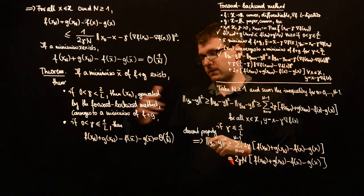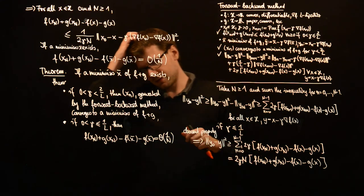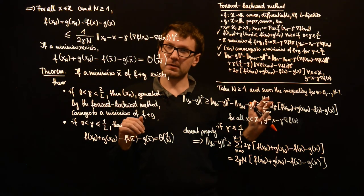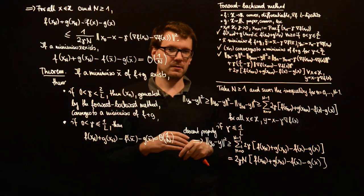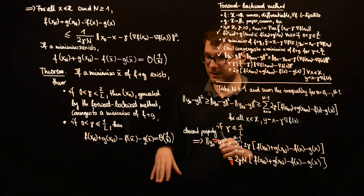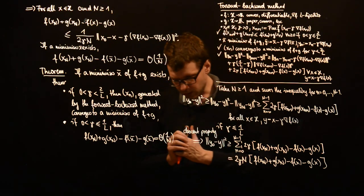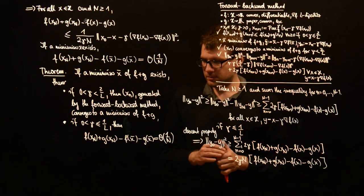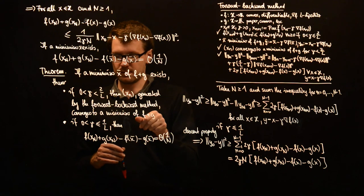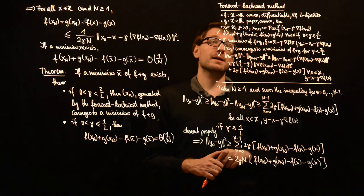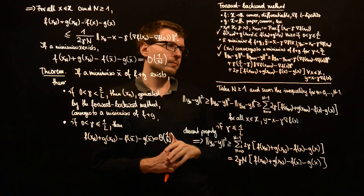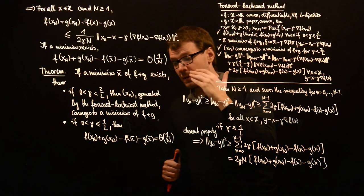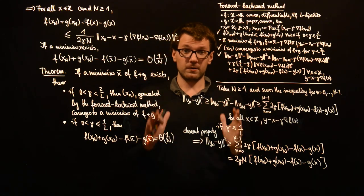Remember that for the subgradient method we showed a convergence rate of O(1/log N). You can improve this with more sophisticated techniques to O(1/√N). But here we have shown the better rate of O(1/N). You should put this in contrast to what we show next: under the same assumptions, with a more sophisticated algorithm that also uses only the gradient of f and proximal points of g, you can further improve this convergence rate to O(1/N²). This will be the content of the next series of videos on the accelerated forward-backward method.